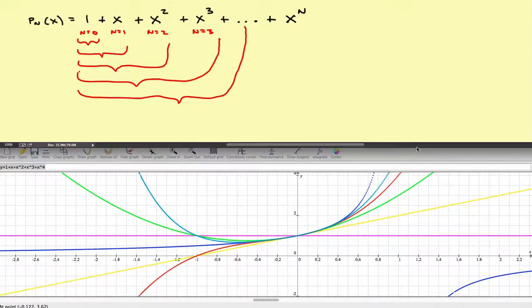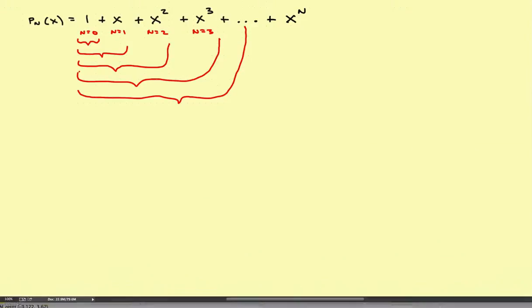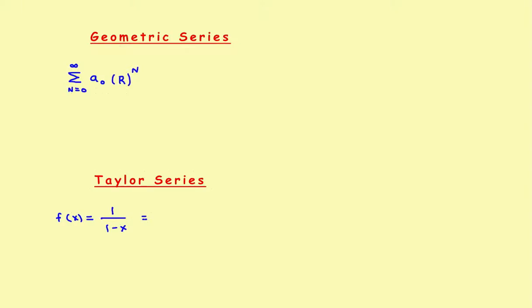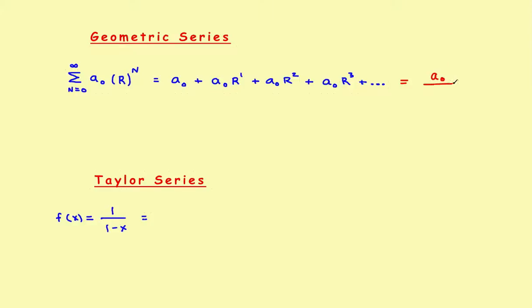Now let's look at why this function is important and why it fits in with sine, cosine, e to the x, and natural log of x. To start, let's look back at a geometric series. A geometric series takes the form: the summation of a sub 0 times some ratio r raised to the n power. If you write this out, it becomes a₀ times r to the first, plus a₀ times r squared, and so on. The sum of the geometric series equals a sub 0 divided by 1 minus r.